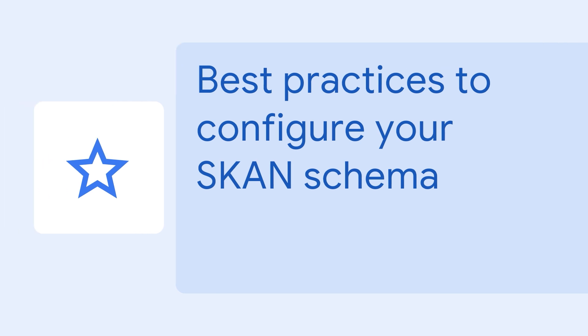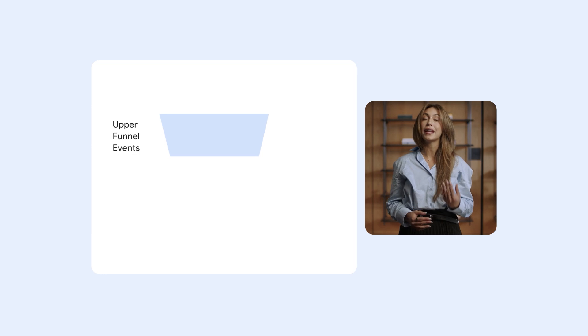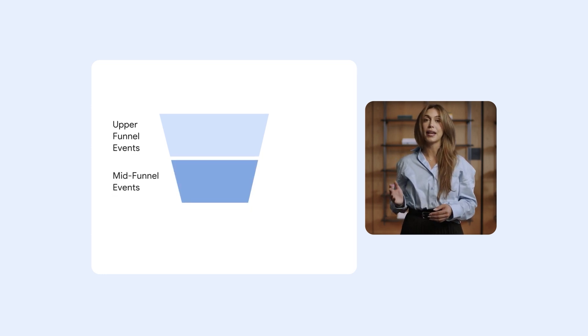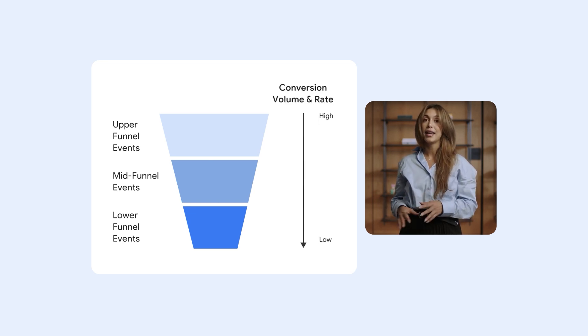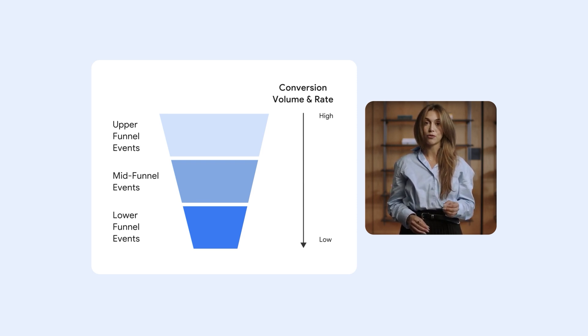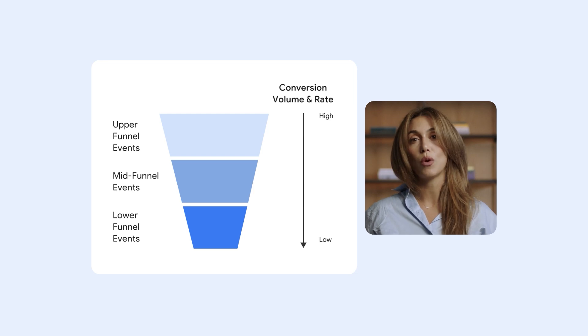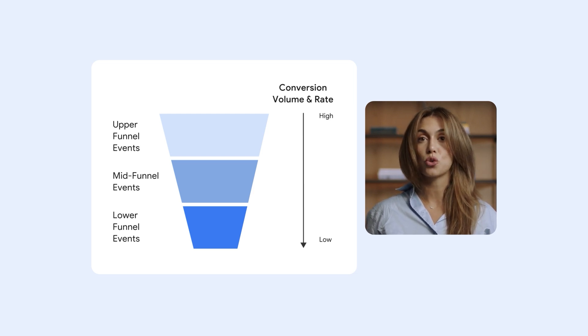Let's assess some best practices on how to configure your SCAN schema in a way that is valid for Google Ads. To start, you'll need to think about how you structure your conversion values based on what spectrum of events matter to your business. You can consider using a funnel approach starting from the beginning of your user's journey and listing all the priority in-app events from upper to lower funnel. This entails listing out all possible conversion events and noting their conversion volume and rate. It's essential to choose high-volume events when choosing which events to optimize your campaigns for. High-volume events will help you avoid high null rates given the constraints of SCAN's shorter conversion window timers and privacy thresholds.